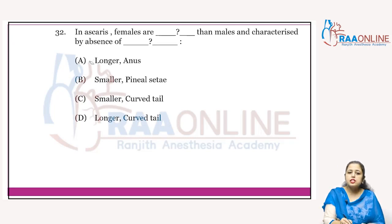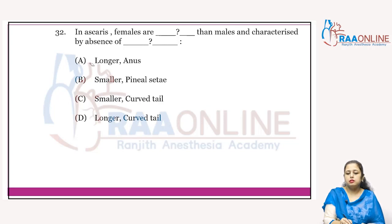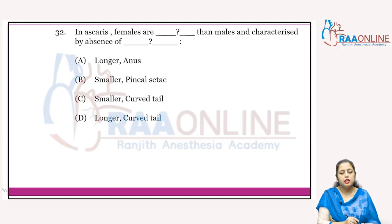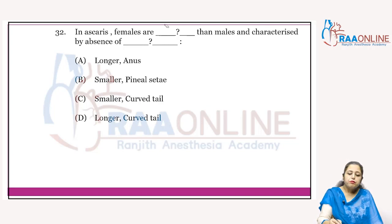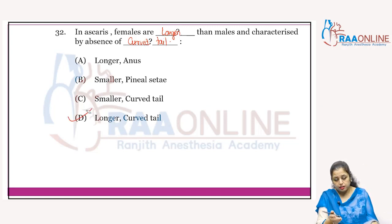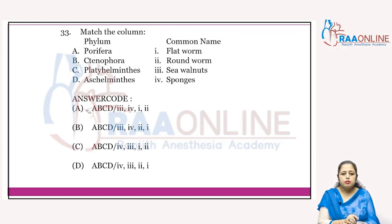In Ascaris, which belongs to phylum Nematohelminthes (also known as Aschelminthes): females are longer than males, and males have a curved tail. So females are longer than males and are characterized by the absence of a curved tail. Answer is D — this is a characteristic feature of Nematohelminthes.